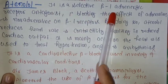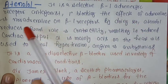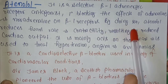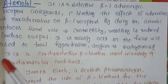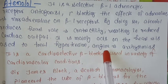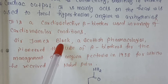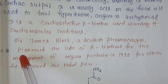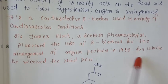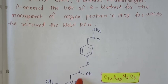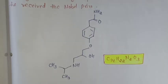Next is atenolol. It is a selective beta-1 adrenergic receptor antagonist, primarily blocking the effects of adrenaline and noradrenaline on beta-1 receptors. By doing so, atenolol reduces heart rate and contractility, resulting in reduced cardiac output. It mainly acts on the heart and is used to treat hypertension, angina, and arrhythmias. It is a cardio-selective beta blocker. Sir James Black, a Scottish pharmacologist, pioneered the use of beta blockers for the management of angina pectoris in 1958, for which he received the Nobel Prize. The molecular formula of atenolol is C14H22N2O3.